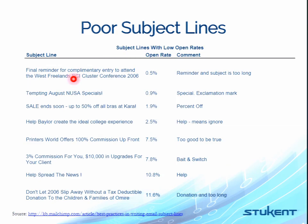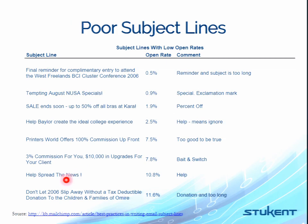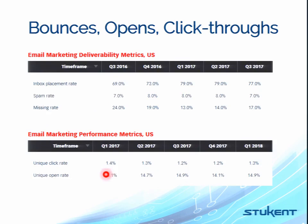Here are some poor subject line examples. 'Final reminder for complimentary entry to attend the West Freelands BCI Cluster Conference 2006' — the subject is too long. Here's one with exclamation marks — looks spammy. Another with a 2.5% open rate. The word 'help' means ignore — 'help spread the news' is another example where 'help' means people will ignore it.